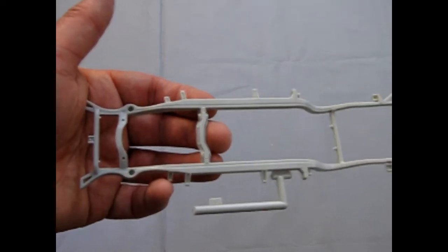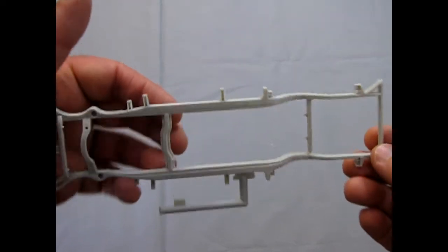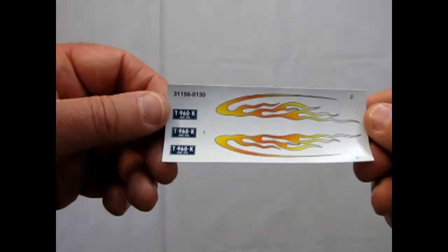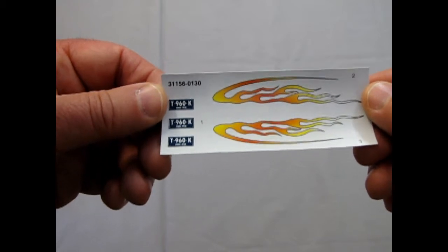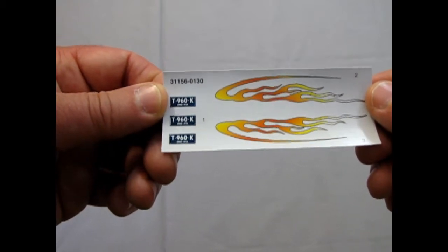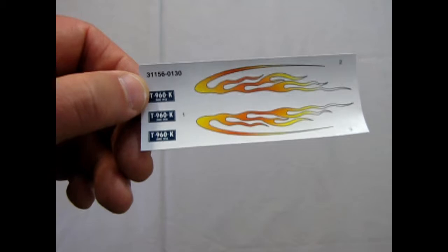So quite a nice model we're adding bare metal foil onto. And then there's a frame. Nice separate detail. I have some flame decals here with T960K Ohio license plates. They actually give you three of those in case you mess one up.